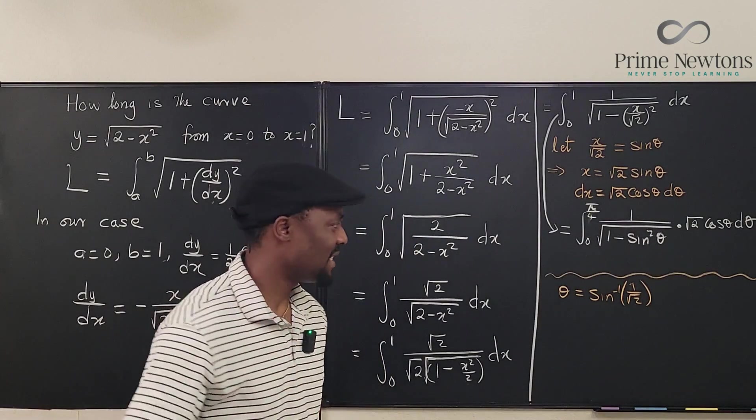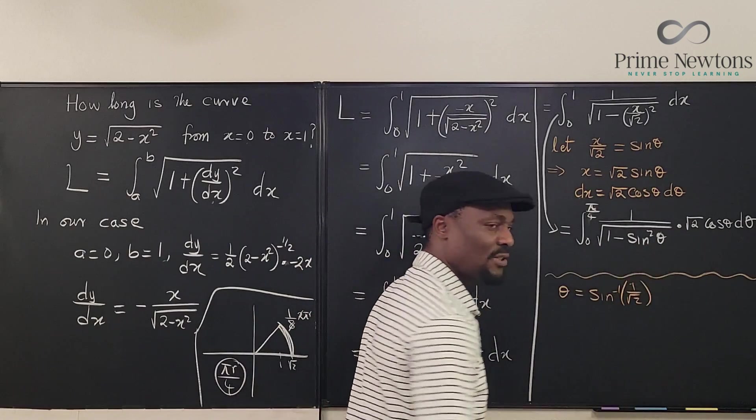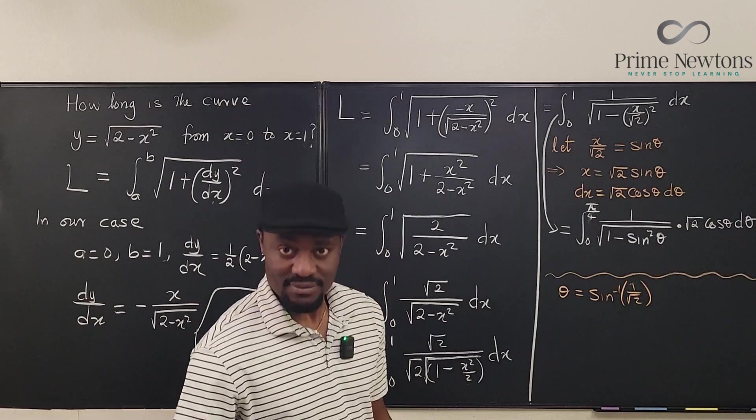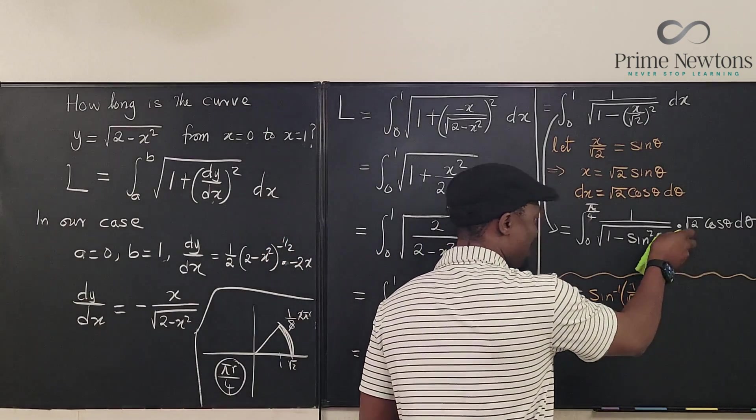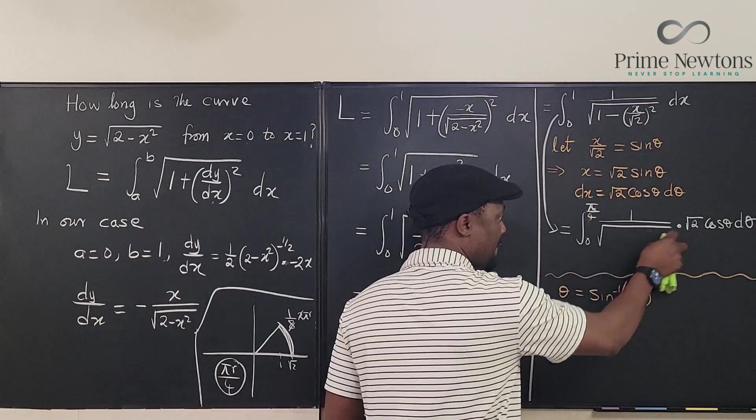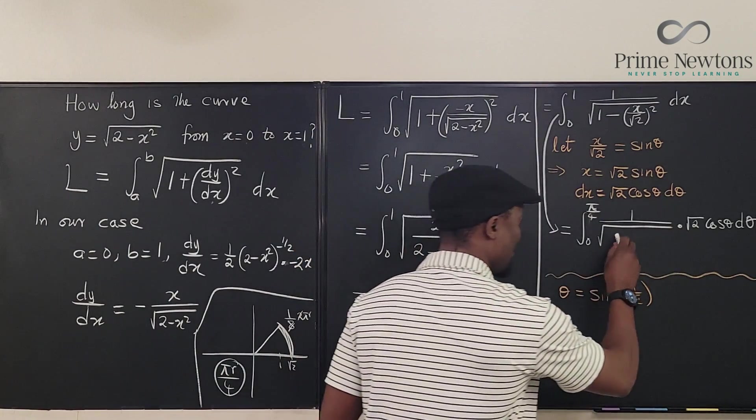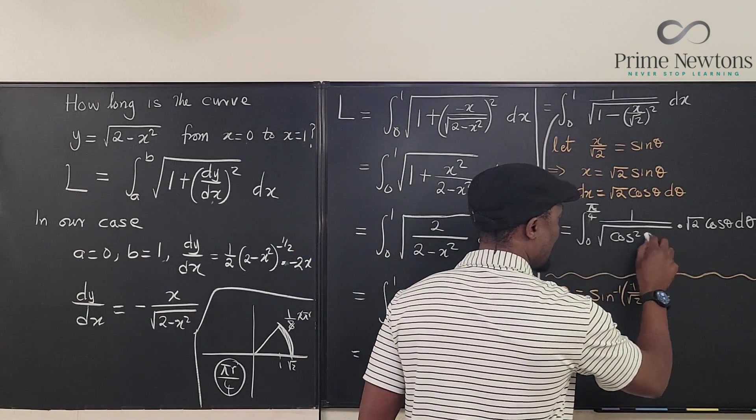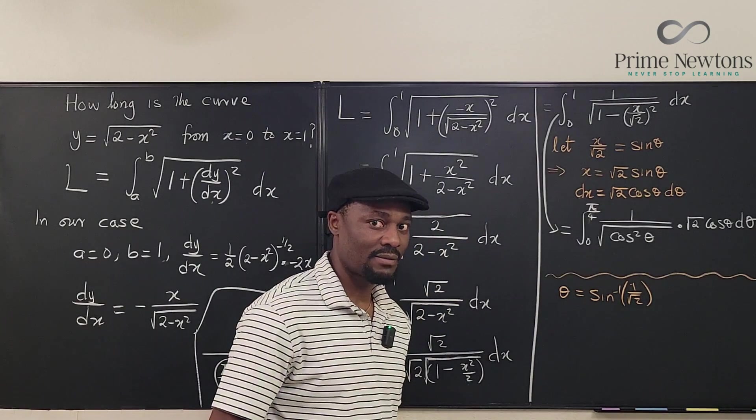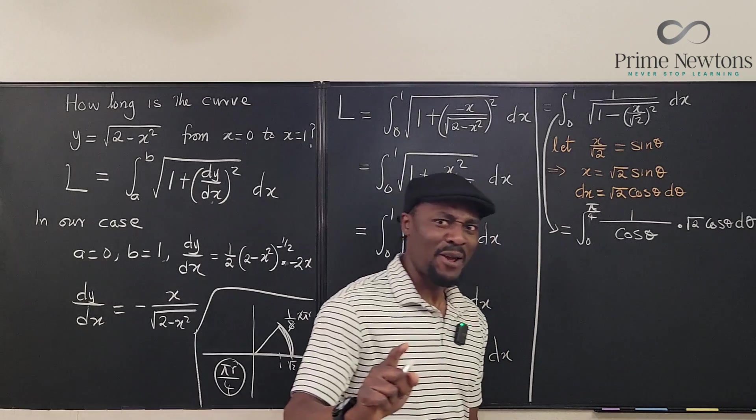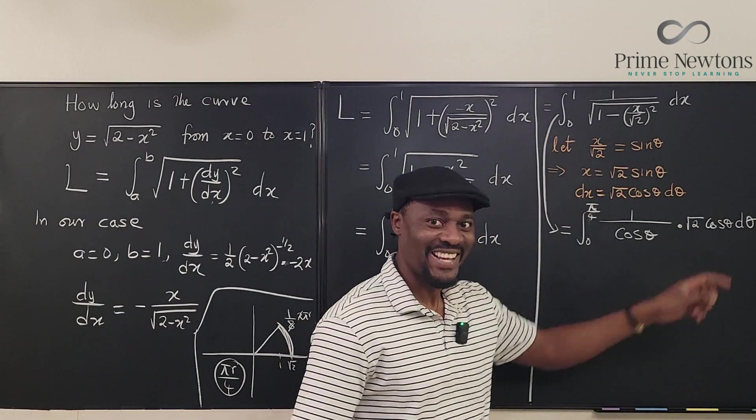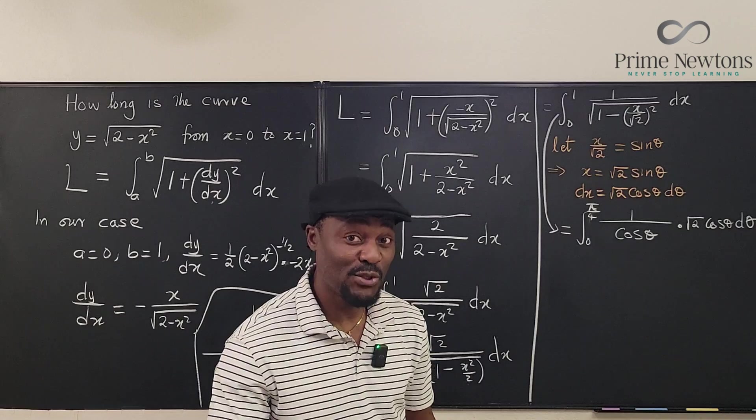Everything else is cool and normal. Let me quickly clean something up again. Look at 1 minus sine squared theta. What is 1 minus sine squared theta? It is cosine squared theta. So this is cosine squared theta. But what is the square root of cosine squared theta? It's cosine theta. But cosine theta will cancel this cosine theta. You see I told you it always resolves nicely. So this guy takes this guy out.